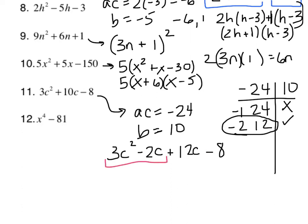Factors of, grouping the first pair, 3C squared and minus 2C, that would be C, leaving 3C minus 2. Again, this has to be 3C minus 2. What comes out of a 12C minus 8 to leave 3C minus 2 is a positive 4. And our answer is C plus 4 and 3C minus 2.